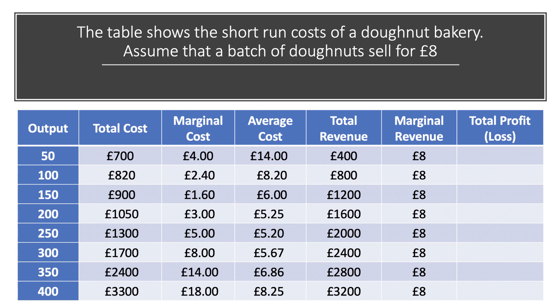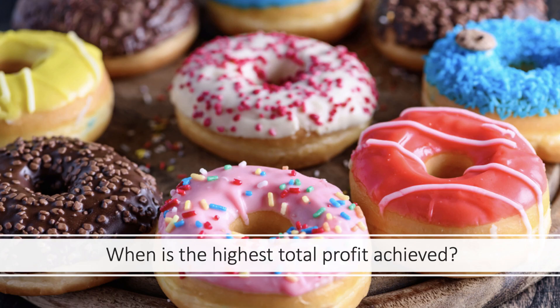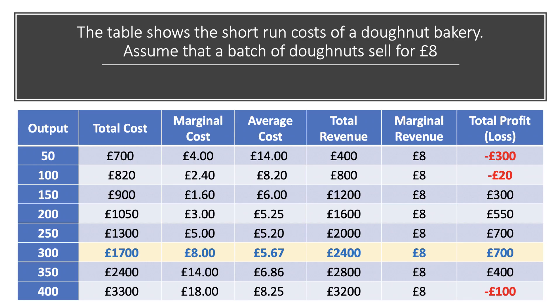Now we have data on total cost and total revenue. Total profit is the difference between revenue and cost. Initially the firm makes a loss on the first 50 and first 100 units. Beyond an output of 150 the profit starts to accumulate. The key question is: when does the firm maximize total profit — when is the highest total difference between cost and revenue achieved?